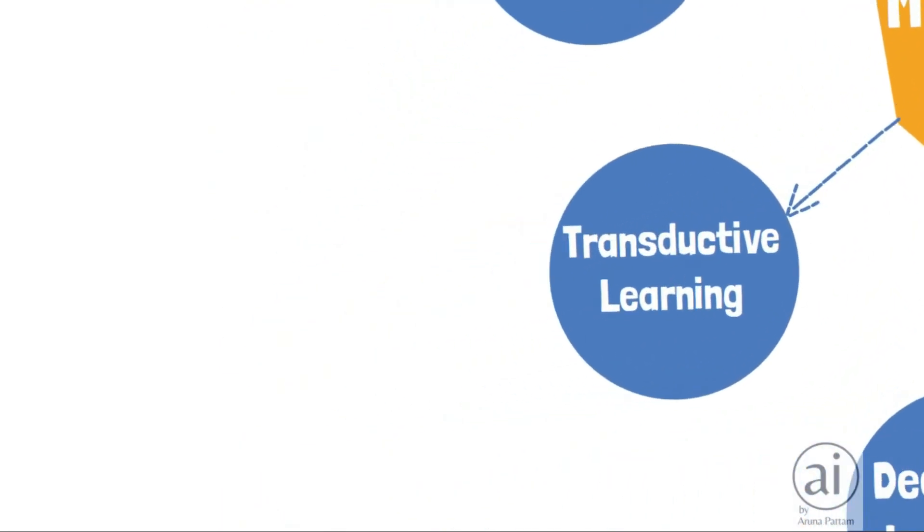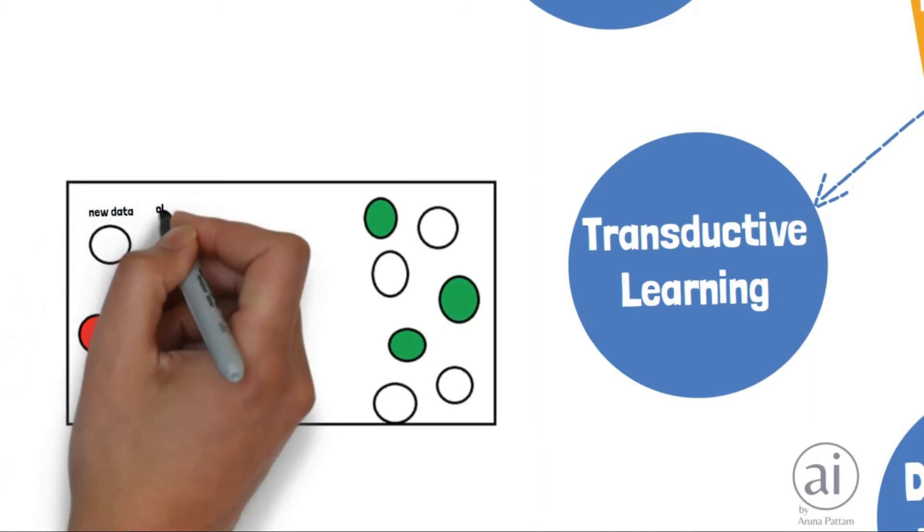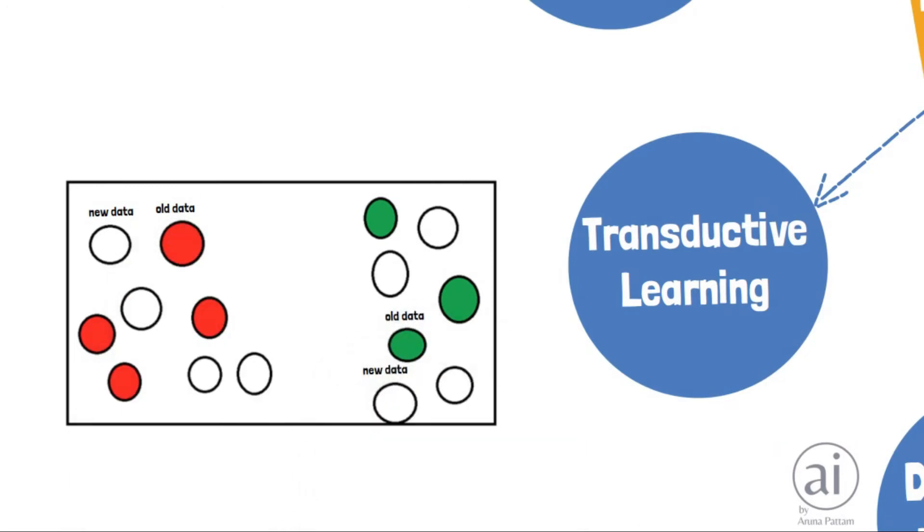Transductive learning: like inductive learning, this machine learning method also teaches the machine with unlabeled data, but unlike inductive machine learning, here the machine predicts the relationship of new data together with old data.